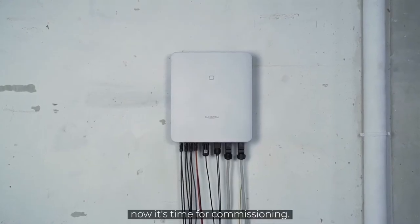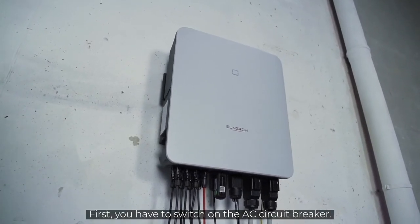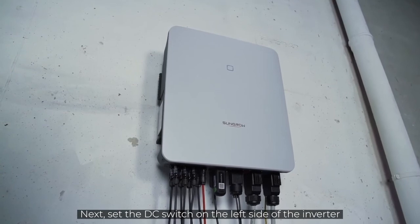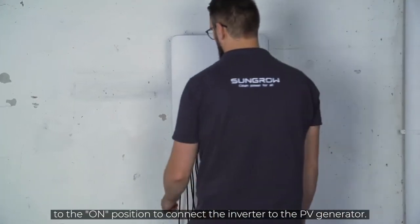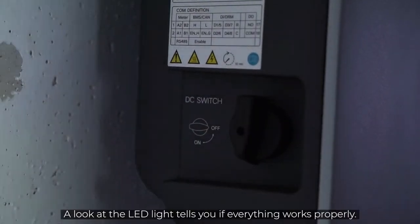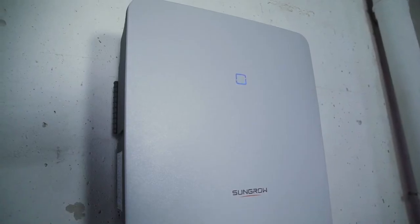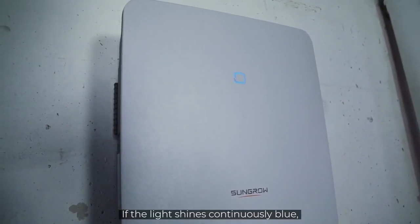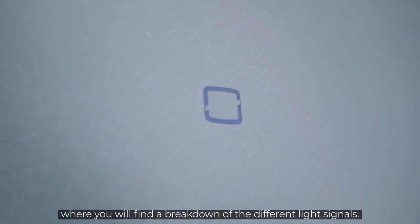First, you have to switch on the AC circuit breaker. Next, set the DC switch on the left side of the inverter to the ON position to connect the inverter to the PV generator. A look at the LED light tells you if everything works properly. If the light shines continuously blue, the inverter is ready for use. If this is not the case, please refer to the manual where you will find a breakdown of the different light signals.